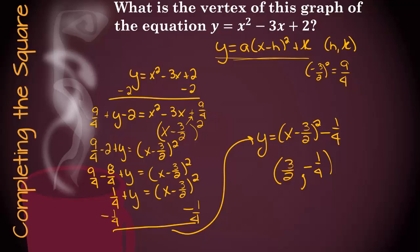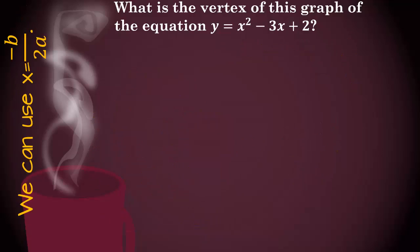So let's look at the next way we can do it. So what we're going to do now is we're going to use x equals negative b over 2a. And to do that, we need to make sure that y equals ax squared plus bx plus c. We need to make sure that our equation is in that form, and it is. So let's go ahead and substitute.